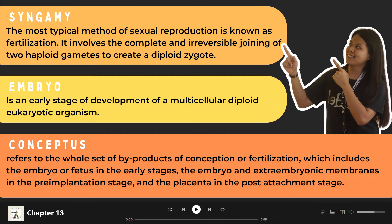We also have the term conceptus. Conceptus refers to the whole set of byproducts of conception or fertilization, which includes the embryo or fetus in the early stages, the embryo and extra-embryonic membranes in the pre-implantation stage, and the placenta in the post-attachment stage.